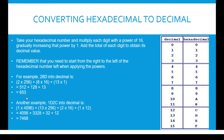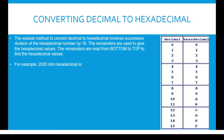Another example: 1D2C. We start with 16 to the power 0, then 16 to the power 1, then 16 to the power 2, and finally 16 to the power 3, which is 4096. We multiply each hexadecimal value with the powers and add them together to get 7468.